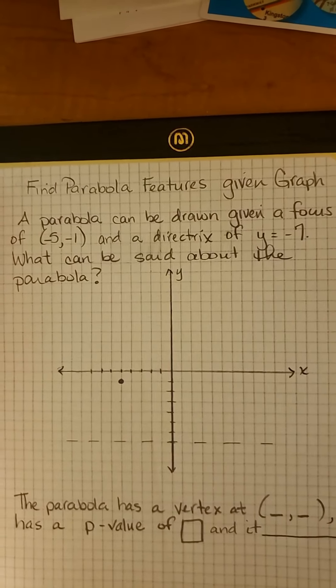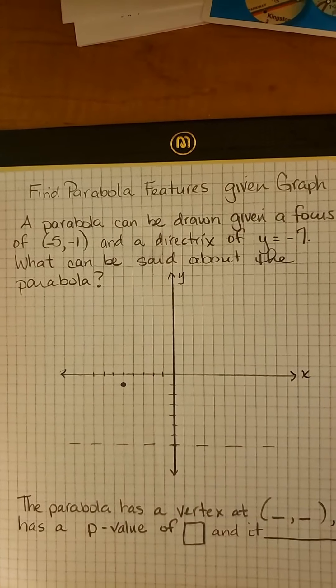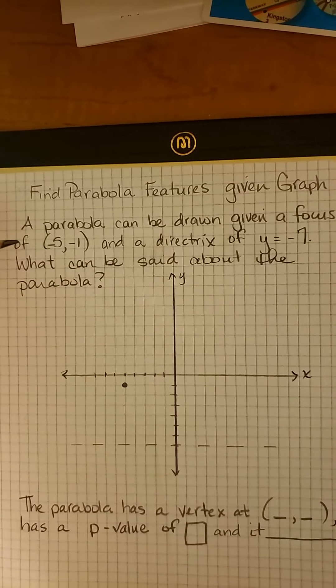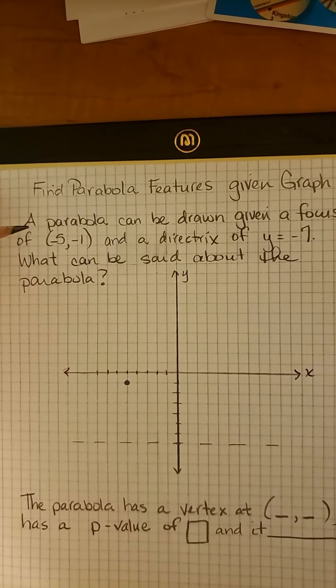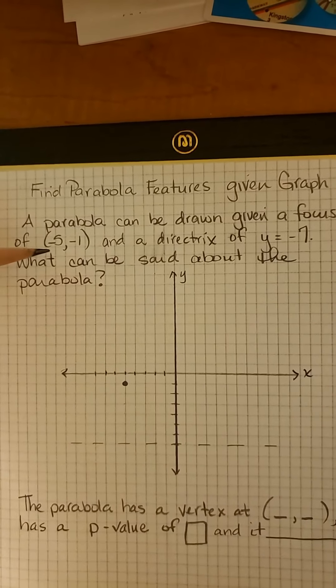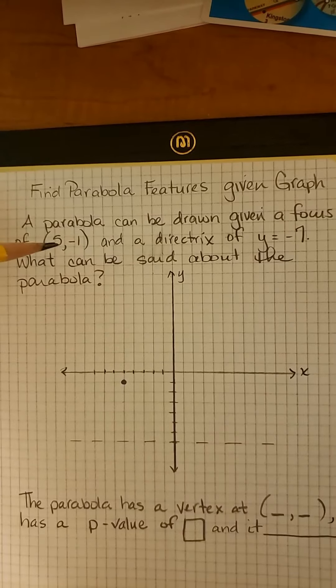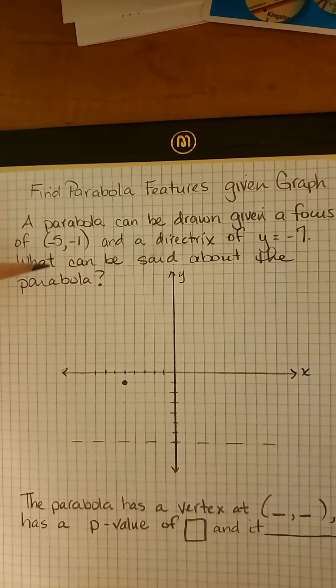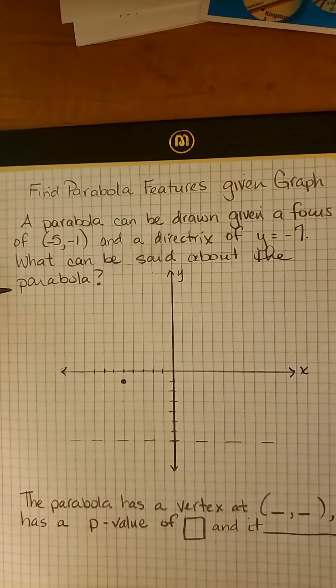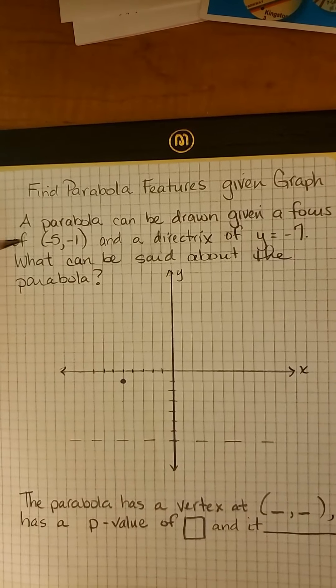Okay, how to find the parabola features given the graph. A parabola can be drawn given a focus of (-5, -1) and a directrix of y equals -7. What can be said about the parabola?